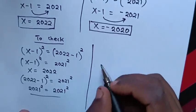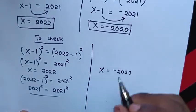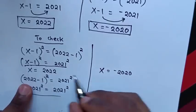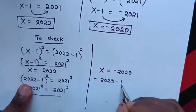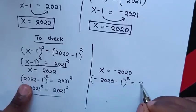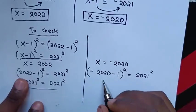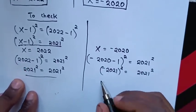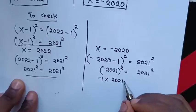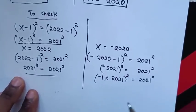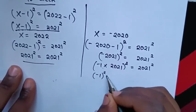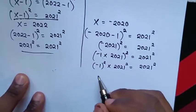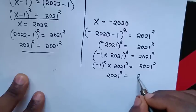To check the second value x = -2020, we substitute into the equation: (-2020 - 1)² = 2021², so (-2021)² = 2021². This is the same as (-1 × 2021)² = 2021², which gives (-1)² × 2021² = 2021². Since (-1)² = 1, we get 1 × 2021² = 2021², which is 2021² = 2021². True.